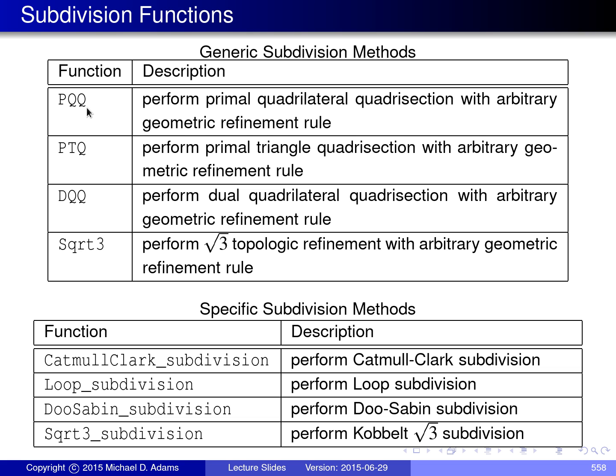The first generic function is PQQ, which performs primal quadrilateral quadrisection as a topologic refinement rule and allows any arbitrary geometric refinement rule to be plugged into the algorithm. So any scheme based on primal quadrilateral quadrisection can be computed with the PQQ function. The next function is PTQ, which performs primal triangle quadrisection for the topologic refinement rule and then allows any arbitrary geometric refinement rule to be plugged in.